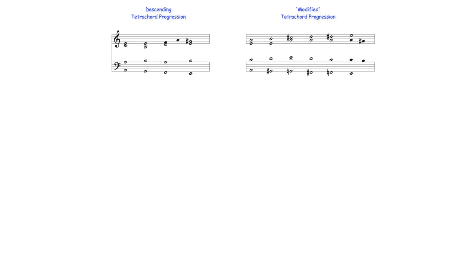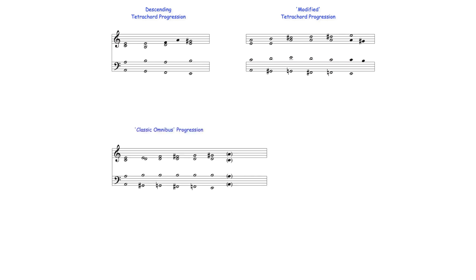In contrast, the function of some chords in a so-called classic omnibus progression — a five-chord progression which in this arrangement closely resembles the modified chromatic tetrachord progression — is unclear. Heard following on from the progression's preceding dominant seventh harmony, for example, this chord is likely to be heard either as dominant seventh harmony on A-minor's lowered seventh degree, or the dominant seventh of A-minor's relative major, C major.